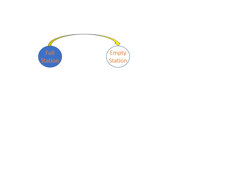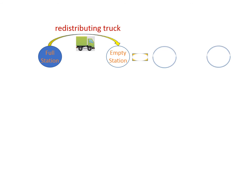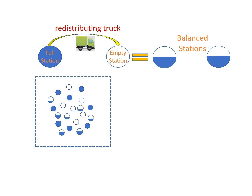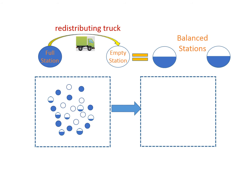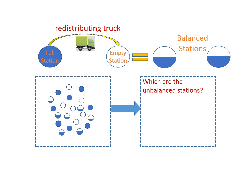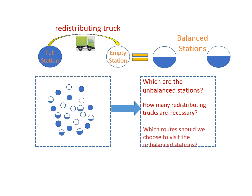In reality, if there is a full station and an empty station, a redistributing truck will be scheduled to rebalance the stations. In order to rebalance the whole bike sharing system, we need to estimate the number of unbalanced stations, decide the optimal number of redistributing trucks, and select the shortest redistributing routes.